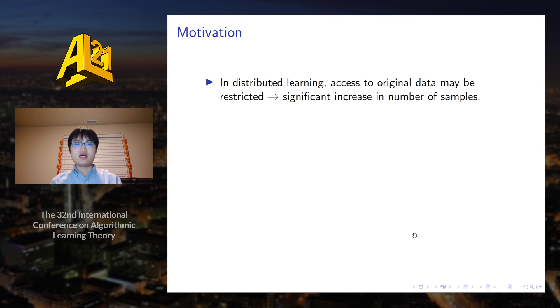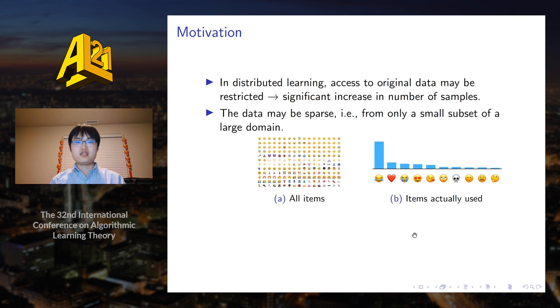Our main motivation is that in distributed learning, access to original data may be restricted. For example, there may be privacy concerns or communication bandwidth may be limited. This usually leads to a significant increase in the number of samples required to fulfill the learning task. On the other hand, even though the data may potentially come from a very large domain, the items that actually appear may only come from a very small subset.